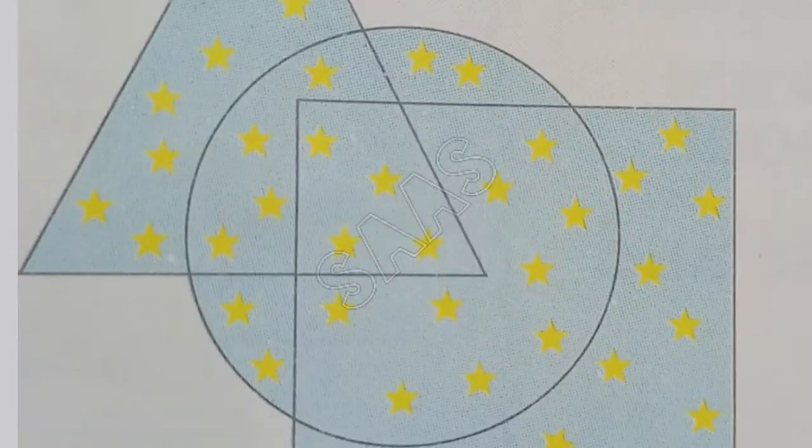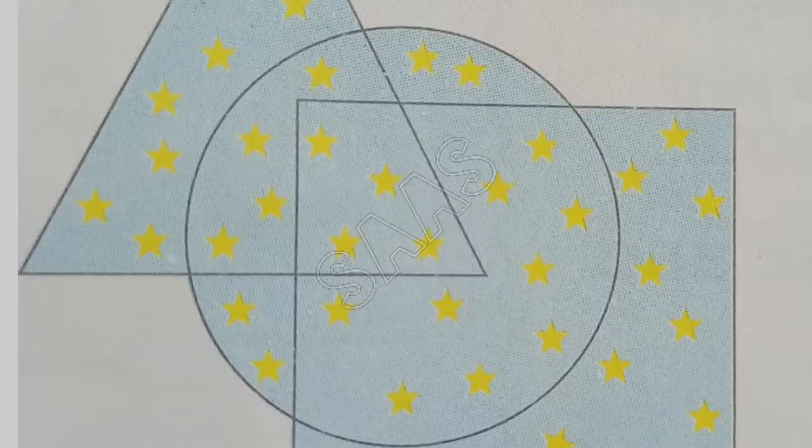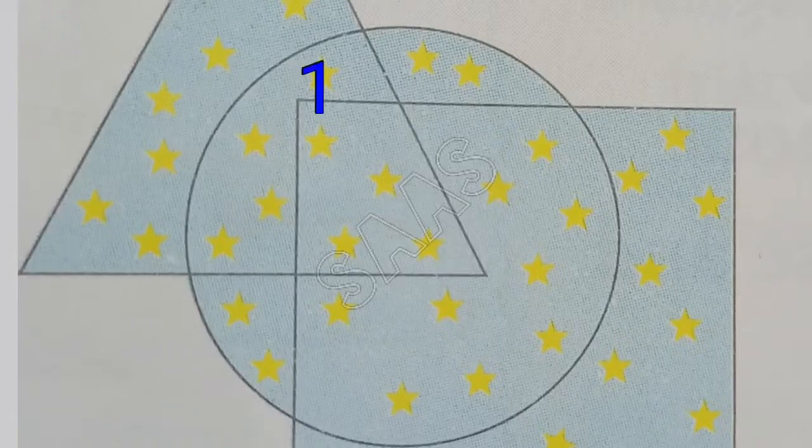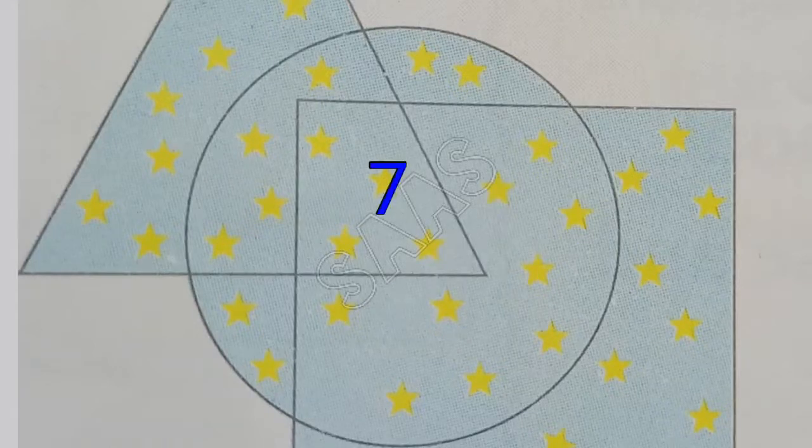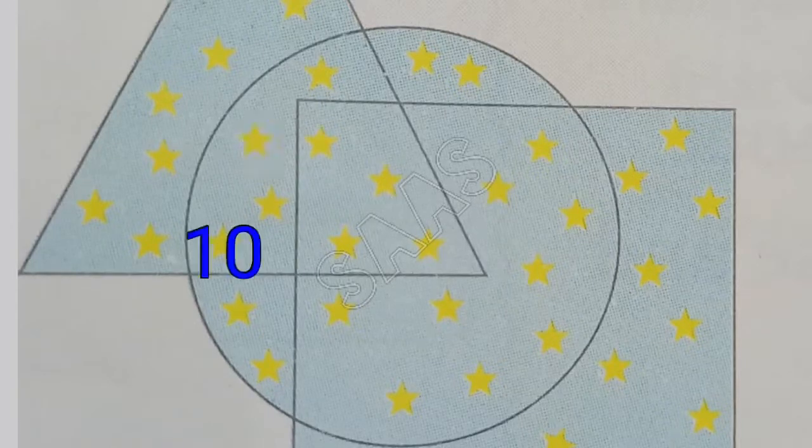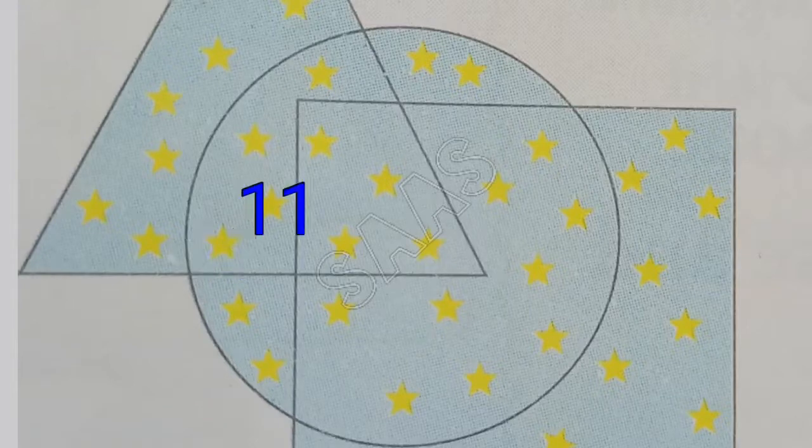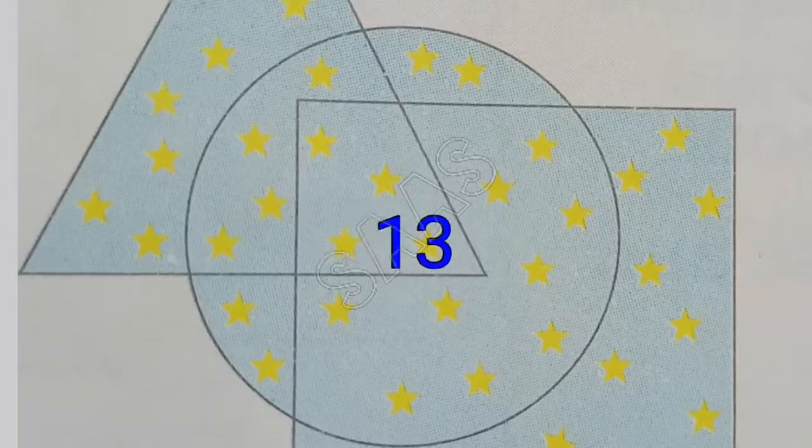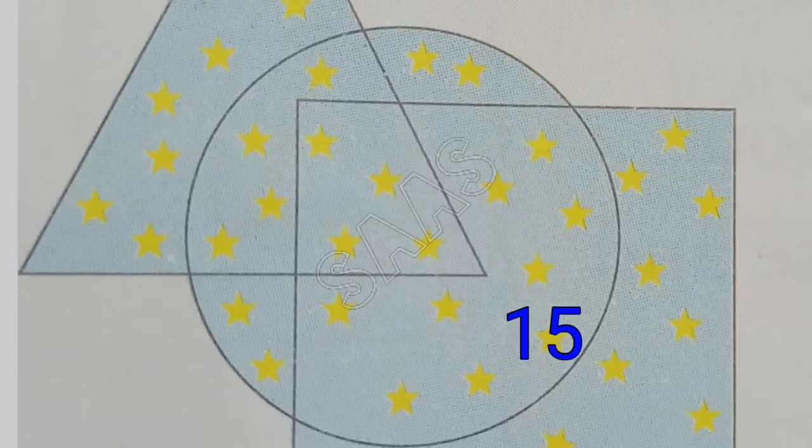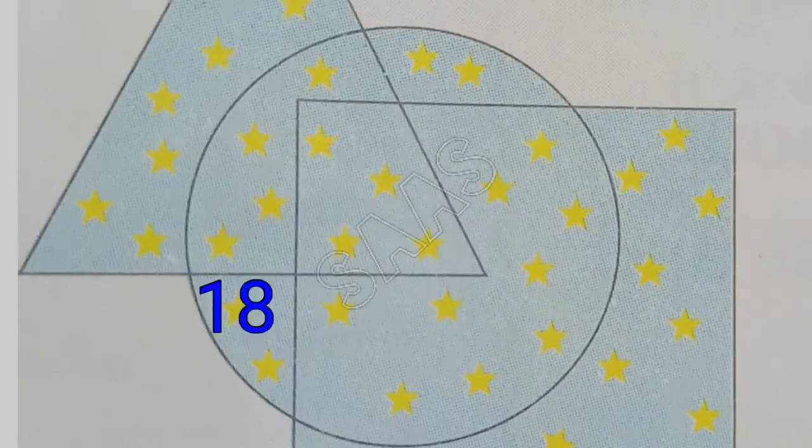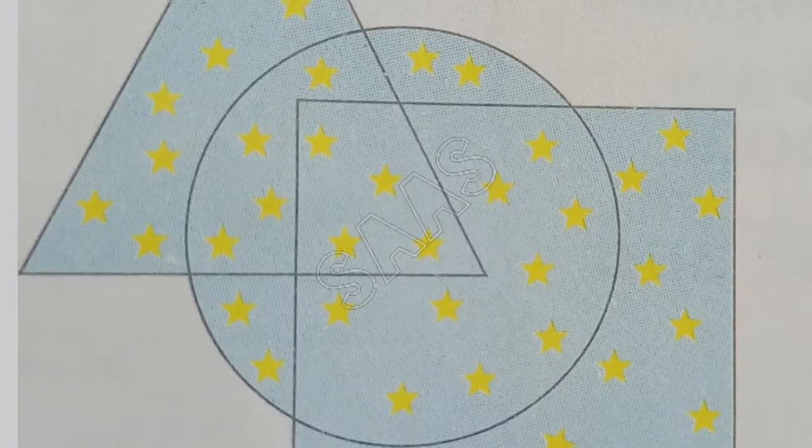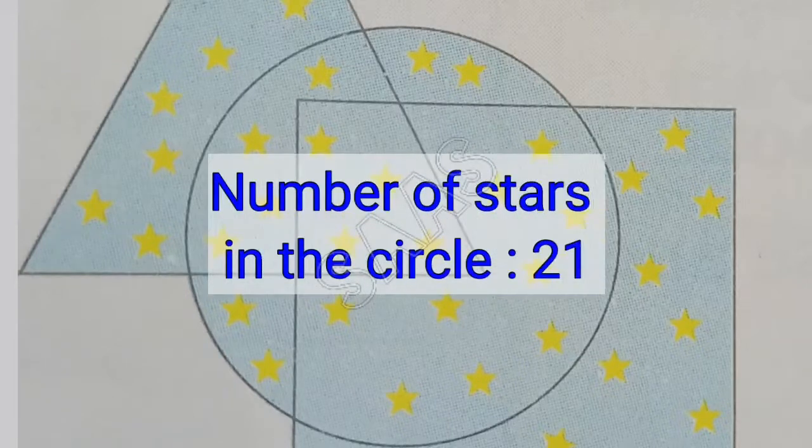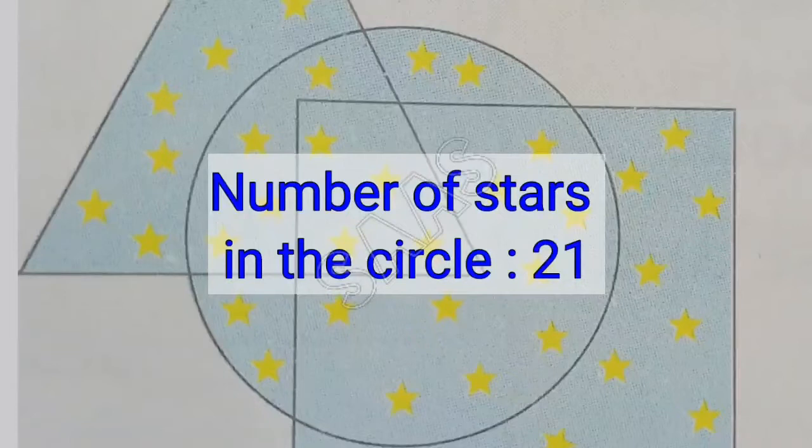Next, count the number of stars in the circle. There are 21 stars in the circle.